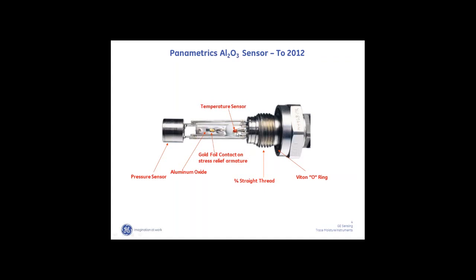We can also couple that sensor with a temperature sensor. Temperature is needed to measure derived parameters from the fundamental moisture measured in dew point. Pressure is also needed to convert to parts per million by volume — we measure the dew point, which gives us the partial pressure of water, and if we divide that by the total pressure we get the volume ratio. So the two parameters we see most often in trace moisture are dew point and parts per million by volume.